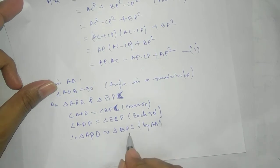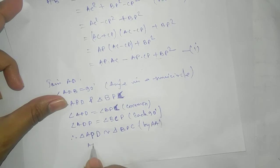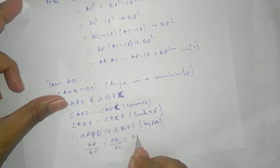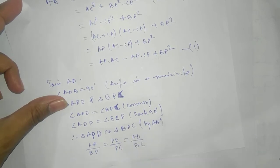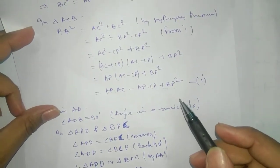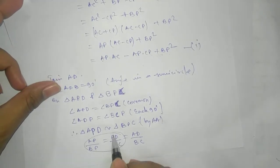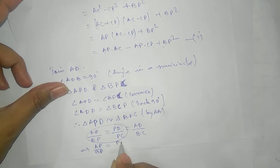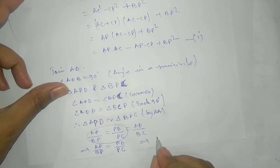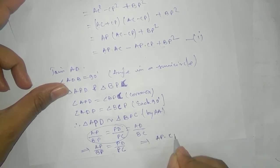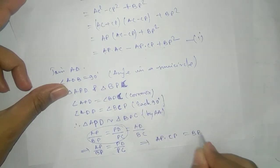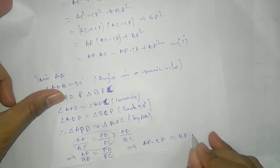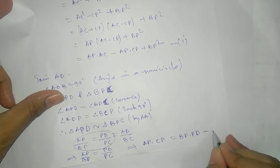Since the triangles are similar, their corresponding sides are proportional: AP/BP = PD/PC = AD/BC. Using AP/BP = PD/PC and cross-multiplying, we get AP·CP = BP·PD. This is equation two.